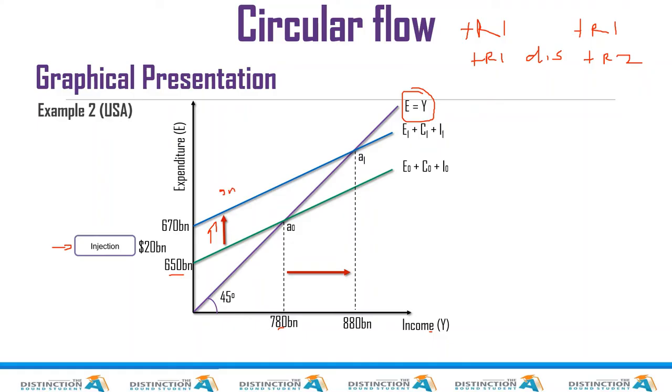Now the multiplier effect can be described as a situation where a small change—that's why I said I like to use the word small—because look at this, it's a small change in spending. But this small change in spending causes a disproportionate change in aggregate demand. So when there is a disproportionate change in aggregate demand, there is going to be a disproportionate change in aggregate income.